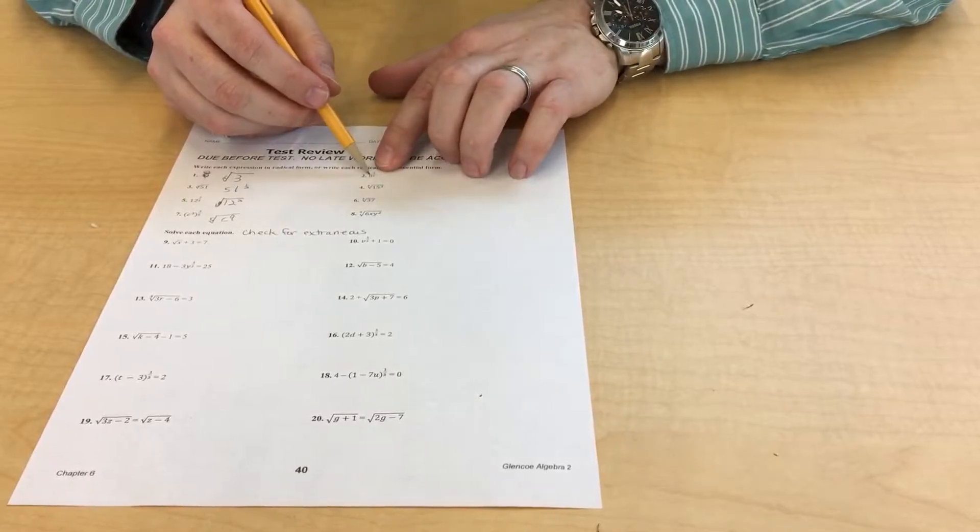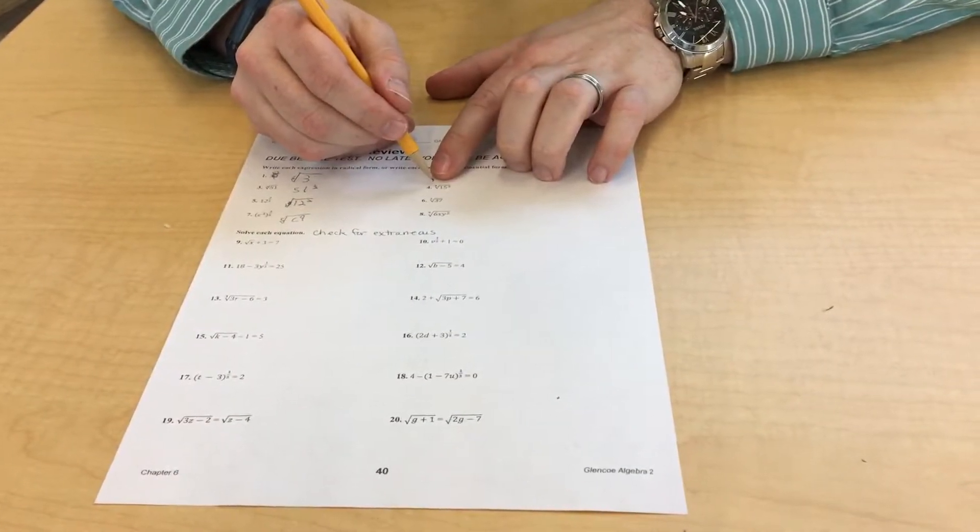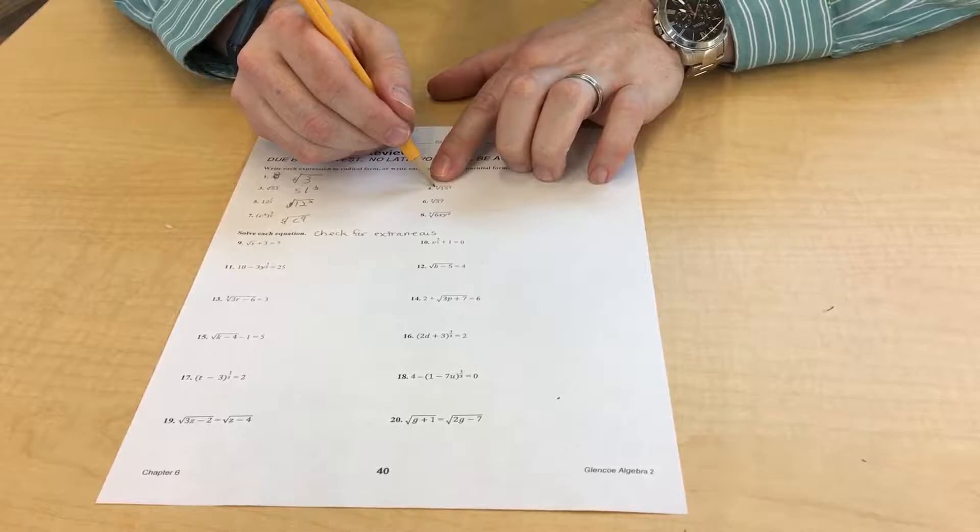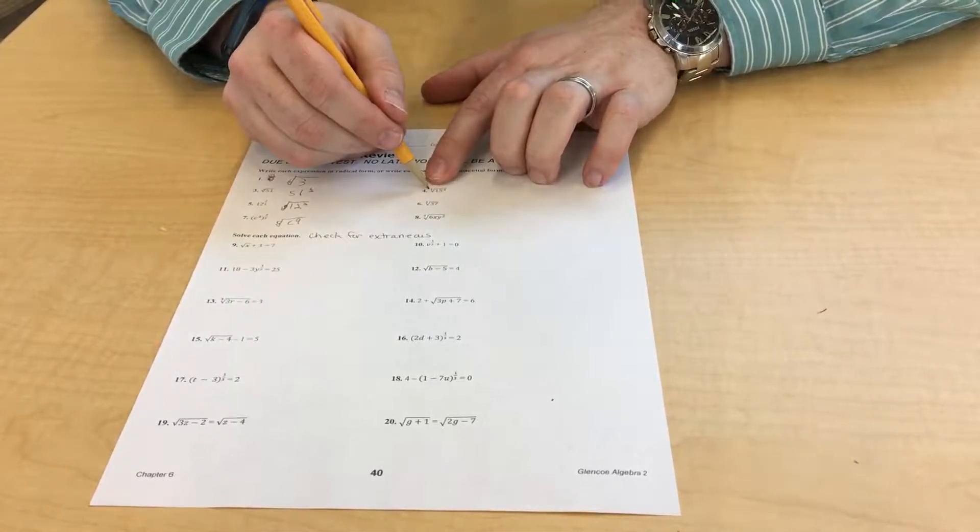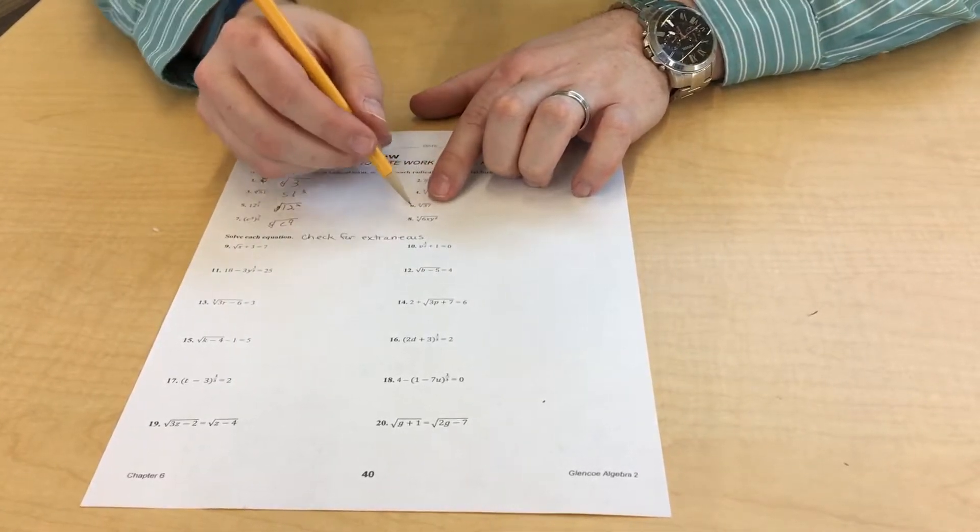So that is the 5th root of C to the 9th power. Same thing over here. This would be the 5th root of 8. This would be 15 to the 3/4 power. Power on top, root on the bottom. 37 to the 1/3 power.